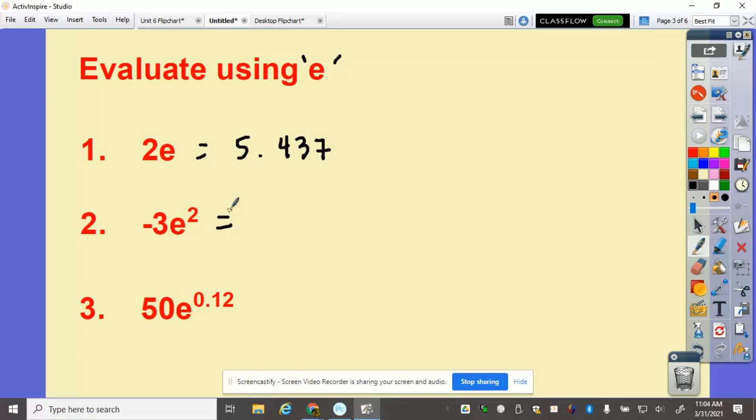Next, negative 3, E is second, division sign, raised to the power of 2. That will give me negative 22.167.